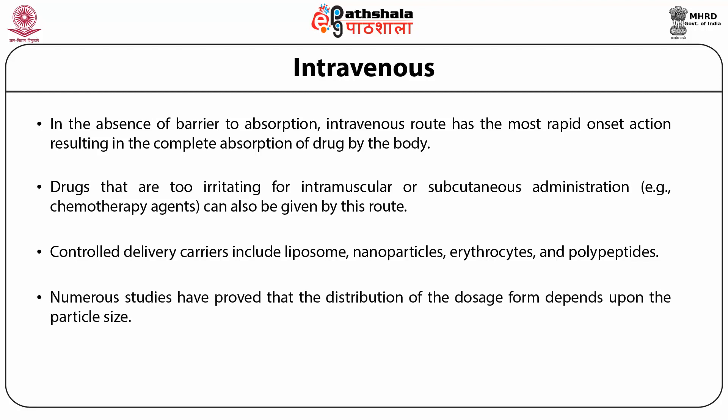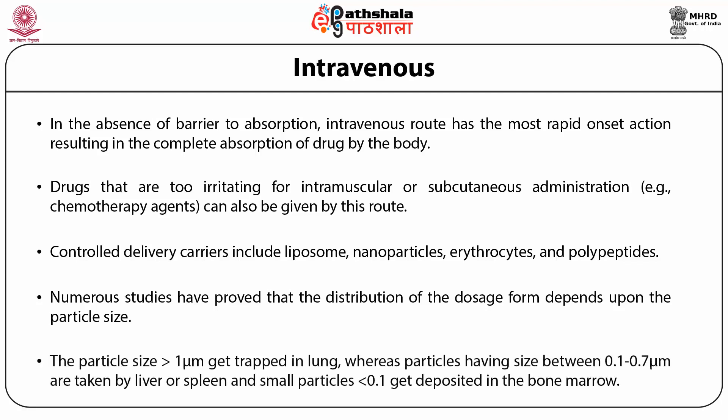Numerous studies have proven that distribution of the dosage form depends upon particle size. Particles greater than one micrometre get entrapped in the lung, whereas particles between 0.1 to 0.7 micrometres are taken up by the liver or spleen, and small particles less than 0.1 micrometres get deposited in the bone marrow.